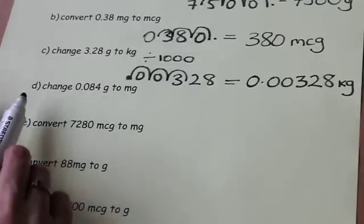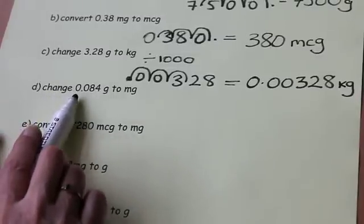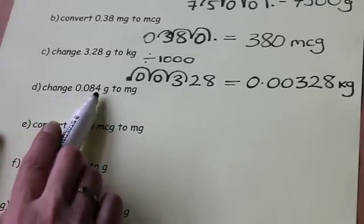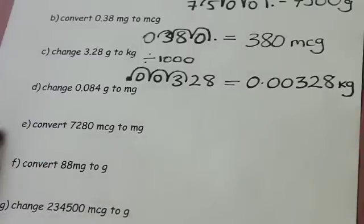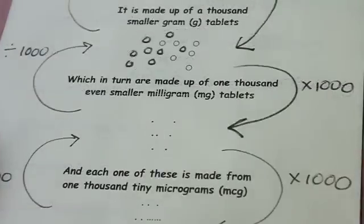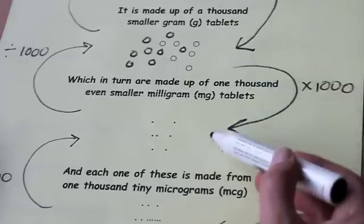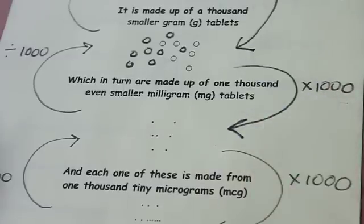Okay, let's have a look at part D. Change 0.084 grams to milligrams. So once again I can refer to my chart to help me decide whether I'm going to multiply or divide. And I can see that grams to milligrams mean that I'm going to be multiplying.